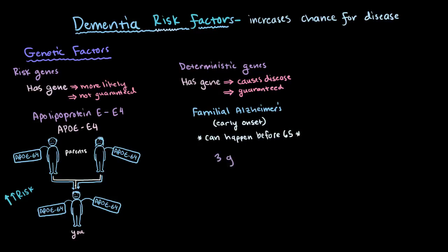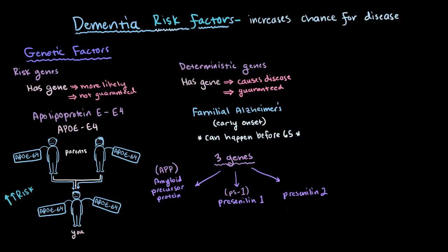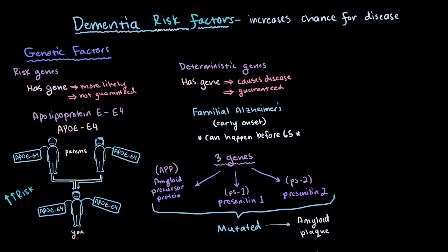Scientists have discovered that this can be caused by a mutation in at least one of three genes: a mutation in amyloid precursor protein, or APP; presenilin-1, or PS1; or presenilin-2, or PS2. When any of these genes are mutated or altered, large amounts of amyloid plaques tend to build up, and these are a major component of Alzheimer's disease. Fortunately, familial or early-onset Alzheimer's resulting from a deterministic gene is very rare.